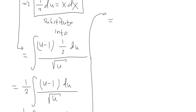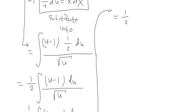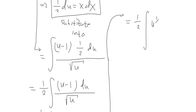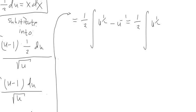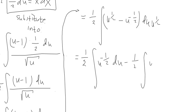Now that I've written it as a power function, I can distribute everything inside. U to the negative 1 half times U gives U to the 1 half, and U to the negative 1 half times negative 1 gives negative U to the negative 1 half. This becomes: 1 half integral of U to the 1 half dU, minus 1 half integral of U to the negative 1 half dU.